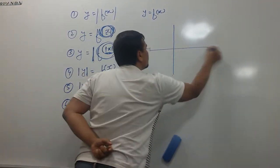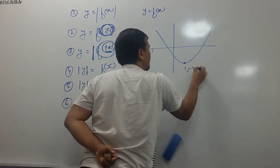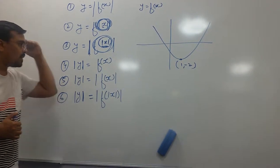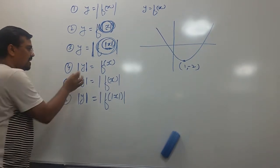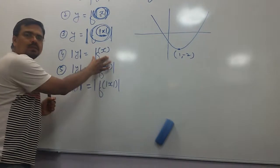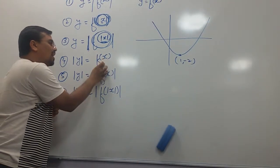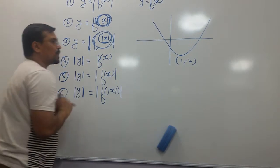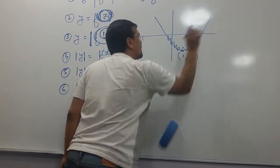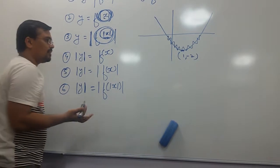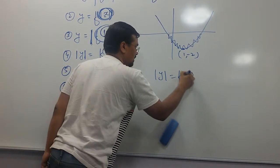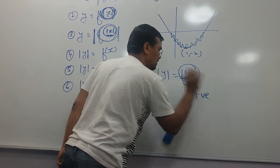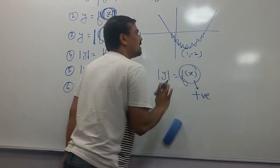If there is some function y equal to f(x), how shall we draw absolute value of y equal to f(x)? Absolute value means the result should always be positive, so f(x) should always be positive. Negative of f(x) is rejected — it is not defined. Absolute value of y equal to f(x) and we know absolute value makes things always positive, so f(x) has to be positive. Negative f(x) is rejected.